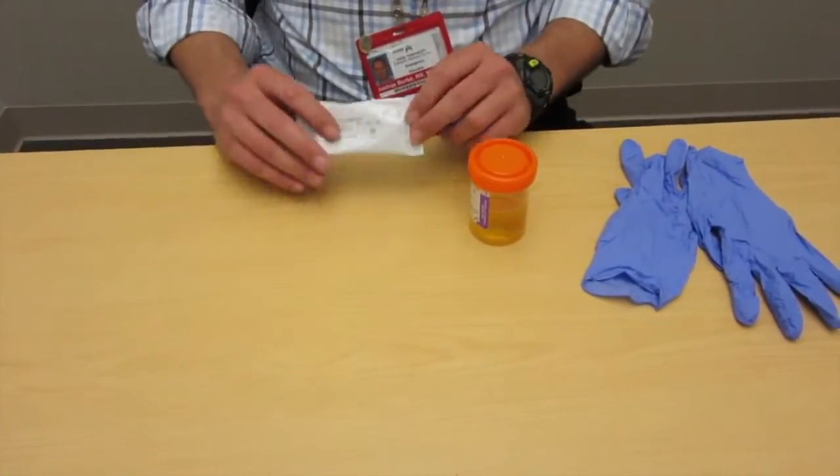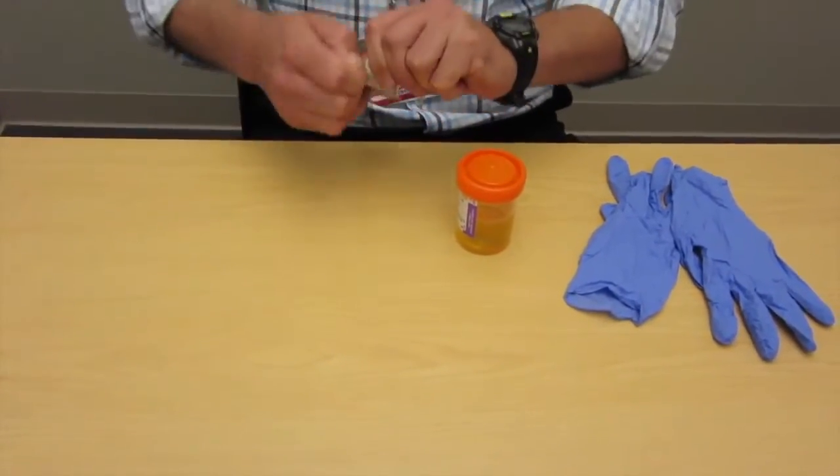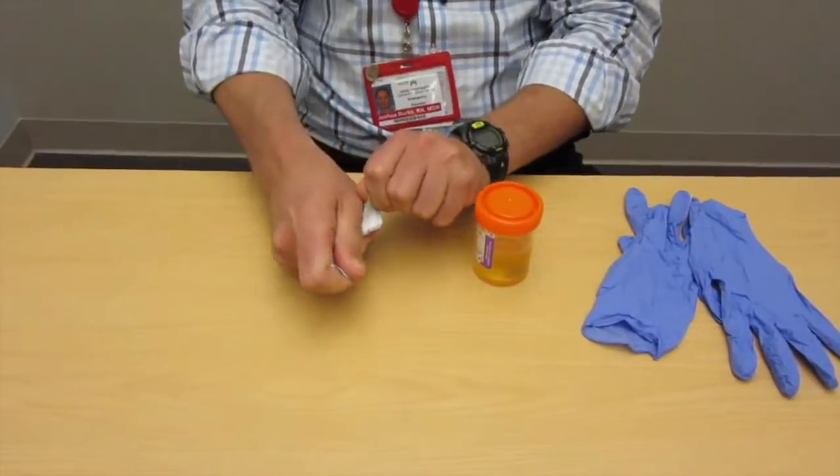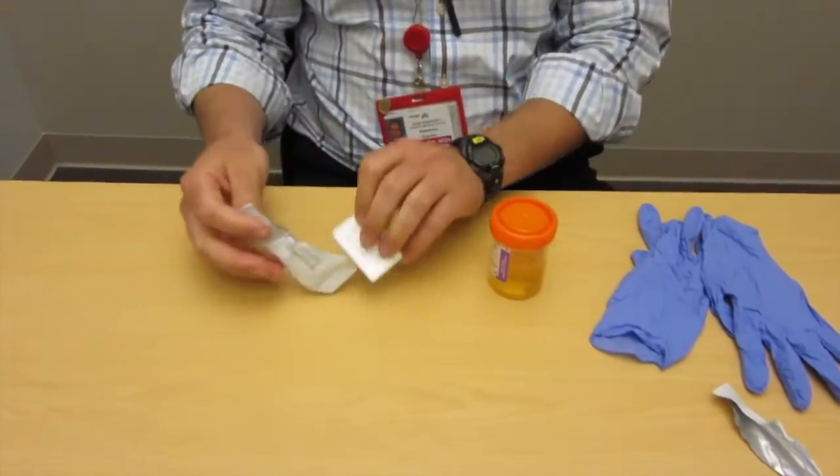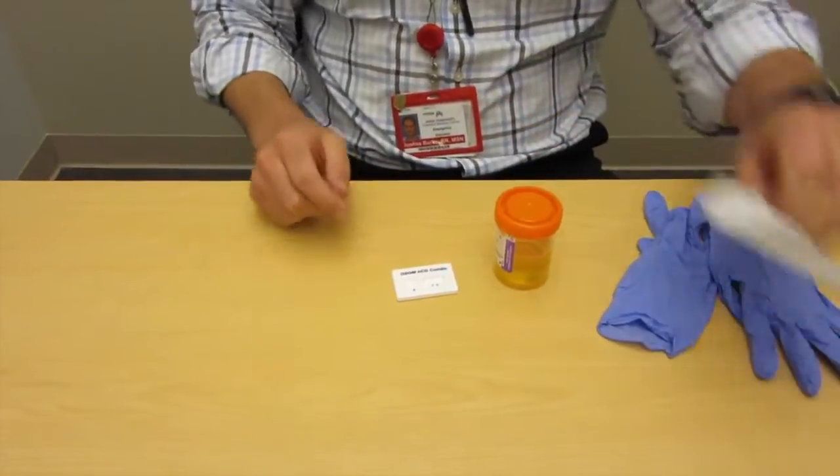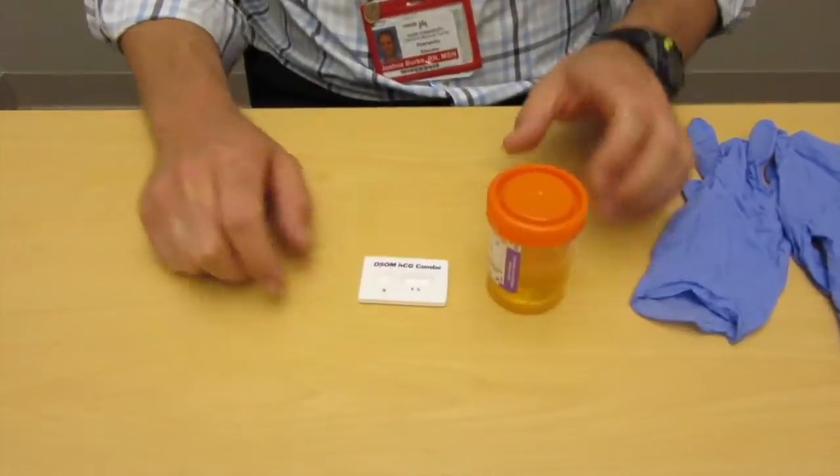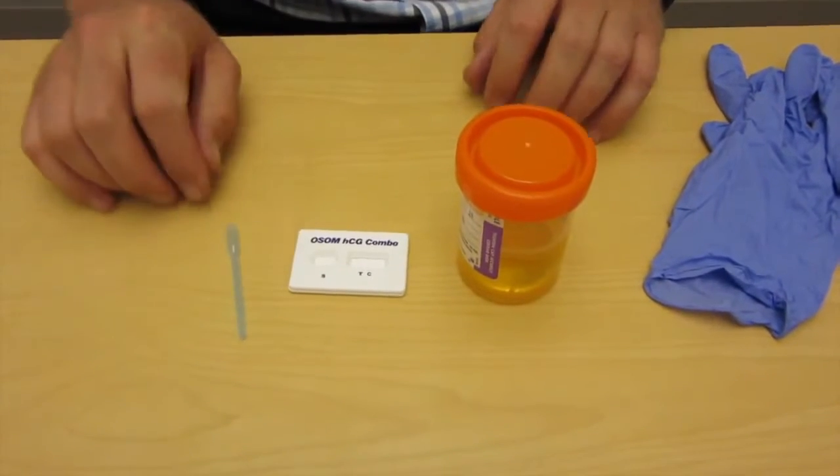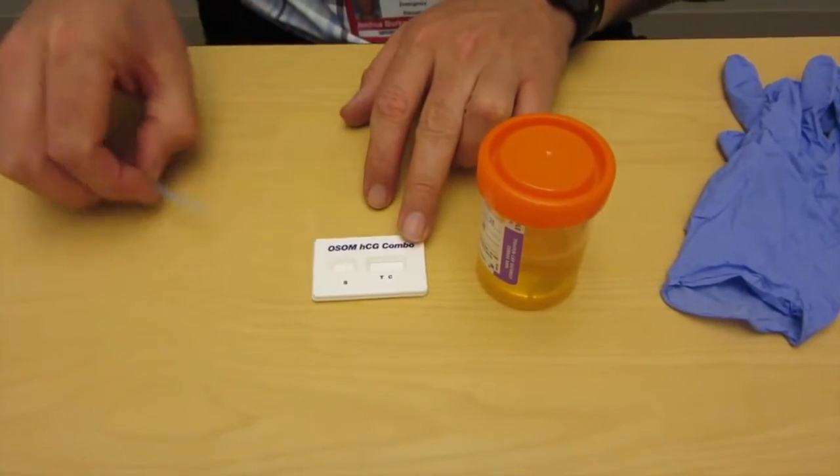Step two would be to actually use the urine pregnancy test kit to dip the urine. So you want to have an appropriate location for doing this. There are locations in the pods including by triage that actually have a chucks and an area to contain any kind of a spill.